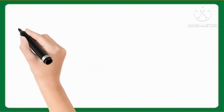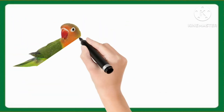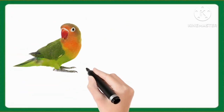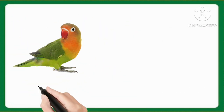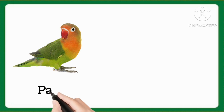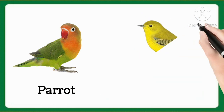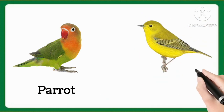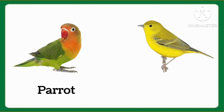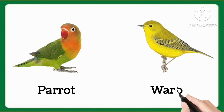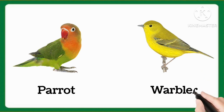And tell me which word is this, kids? This is parrot. Parrot. And now tell me which word is this, kids? This is wobbler. Wobbler.